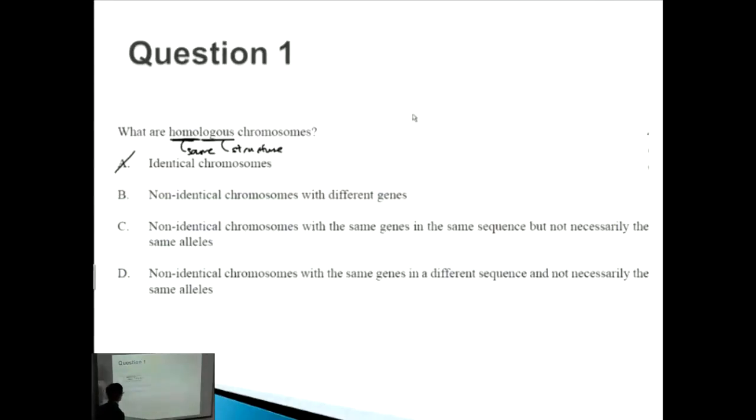Now they're not identical chromosomes, because otherwise they'd be called identical chromosomes. What they do have is the same structure and the same genes in the same loci or positions, but not necessarily the same alleles, which are different forms of the genes. So let's draw our chromosome here.